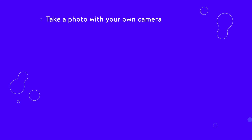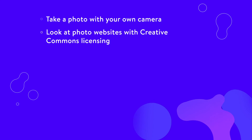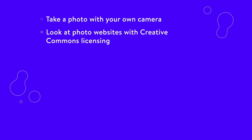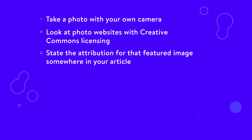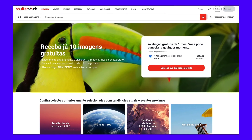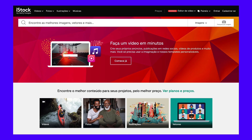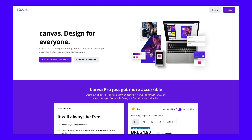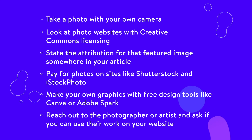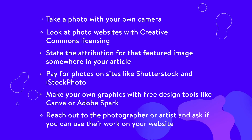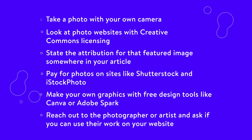There are exceptions to this rule. The only time it's okay to share an image on your website for free is when you pull from a site like Pexels or Unsplash — yet even then, you're usually asked to provide attribution, which is tough since featured images often don't allow captions. Follow these rules to ensure your featured images are legal: take a photo with your own camera; look at photo websites with Creative Commons licensing like Unsplash and Pexels; state the attribution somewhere in your article; pay for photos on sites like Shutterstock and iStock Photo; make your own graphics with free design tools like Canva or Adobe Spark; or reach out to the photographer and ask if you can use their work — for free, a fee, or with attribution — and get it in writing.